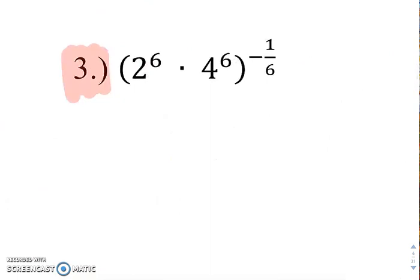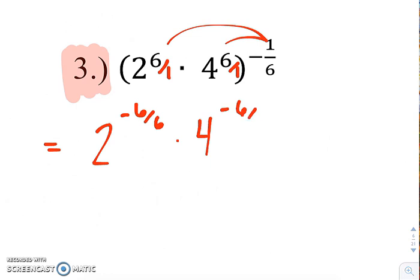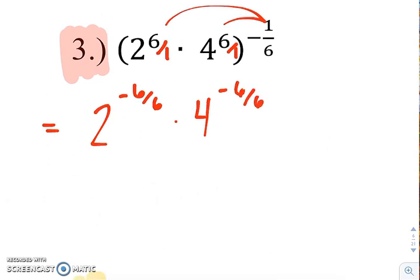Similarly, for number 3, we're going to distribute that negative 1 sixth. So again, I'm just going to make these 6 over 1. So we get 2 to the negative 6 sixths times 4 to the negative 6 sixths. So 6 over 6 is just 1.